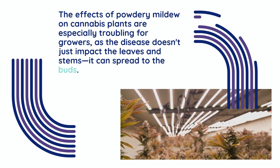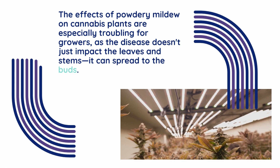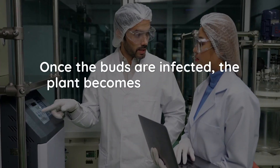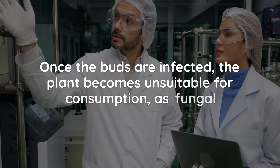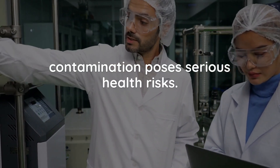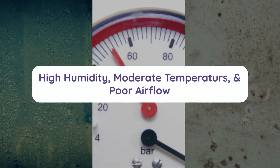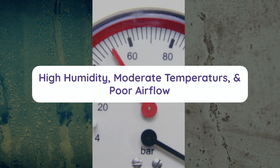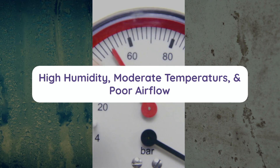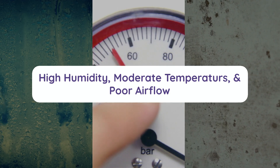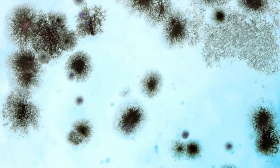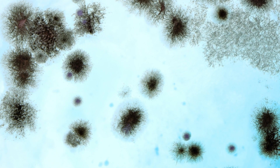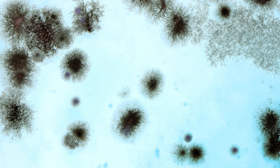The effects of powdery mildew on cannabis plants are especially troubling for growers, as the disease doesn't just impact the leaves and stems — it can spread to the buds. Once the buds are infected, the plant becomes unsuitable for consumption, as fungal contamination poses serious health risks. To make matters worse, powdery mildew spores are airborne, allowing the disease to spread quickly and easily to nearby plants. Preventing powdery mildew starts with creating an environment that actively discourages fungal growth, addressing conditions such as high humidity, moderate temperatures, and poor airflow.